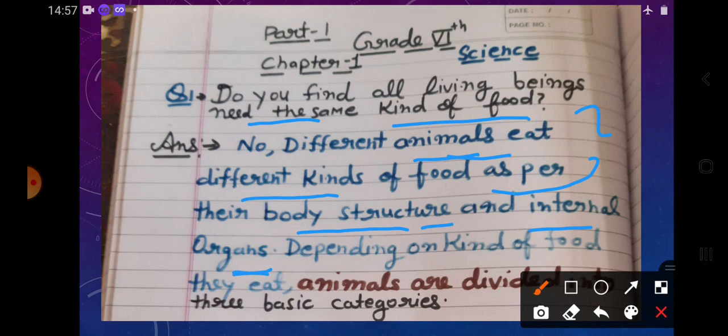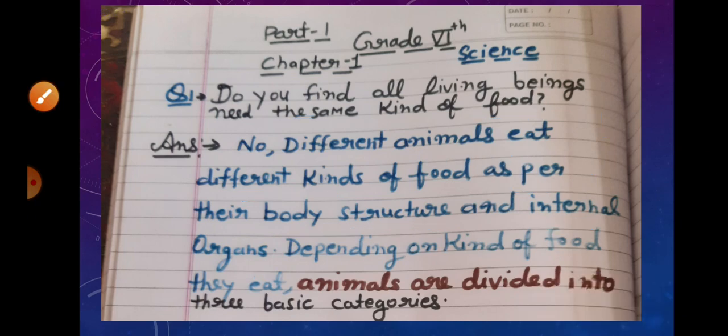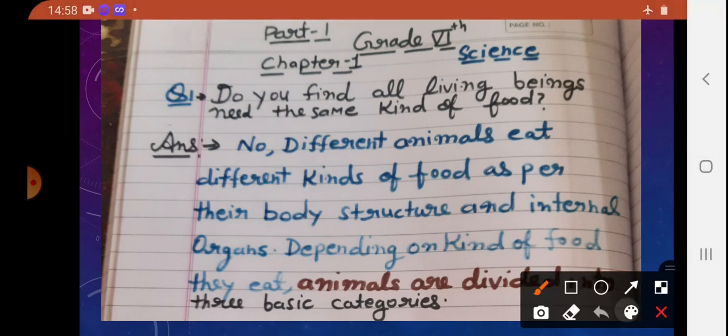Depending on kinds of food they eat, animals are divided into three basic categories.